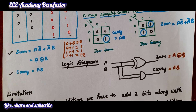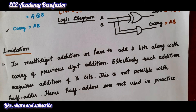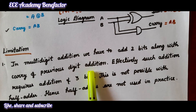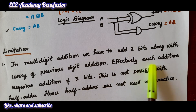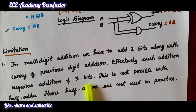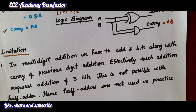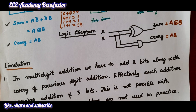Coming to the limitation of half adder: in multi-digit addition, we have to add two bits along with the carry of the previous digit addition. The half adder cannot handle this because such addition requires adding three bits. Hence, half adders are not used in practice for multi-digit addition, as we can only add two bits with a half adder.